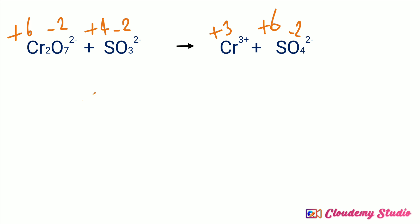Now in the second step, we need to identify the oxidation reaction and reduction reaction and determine how the oxidation number increases and decreases. We need to compare the change in oxidation number for chromium and sulfur.